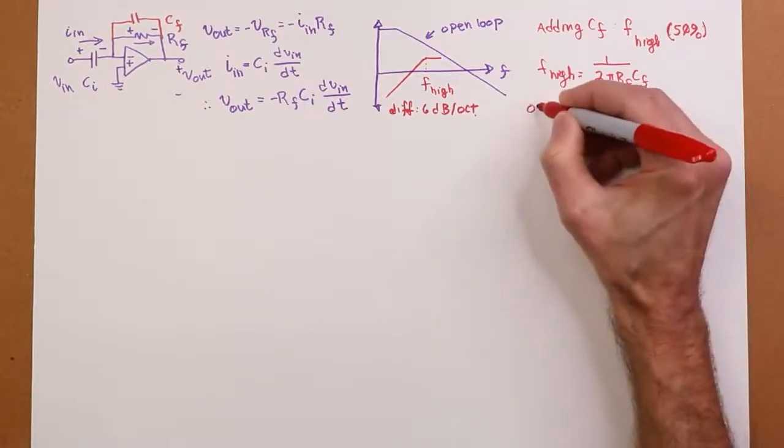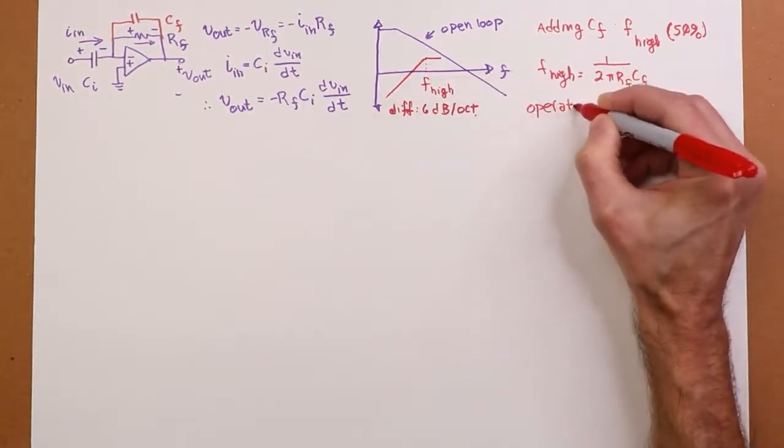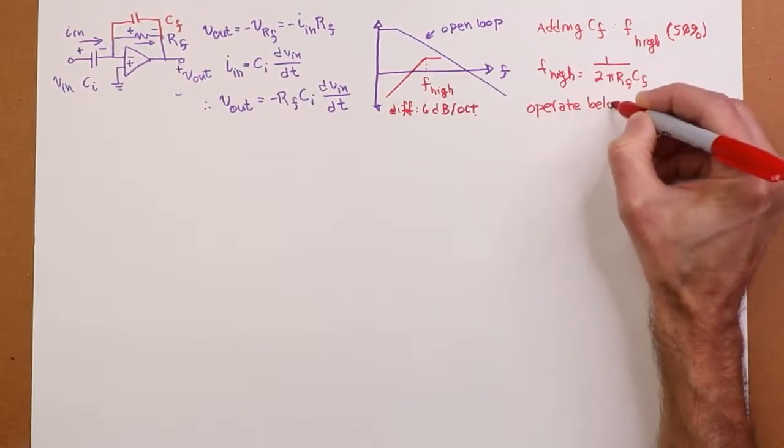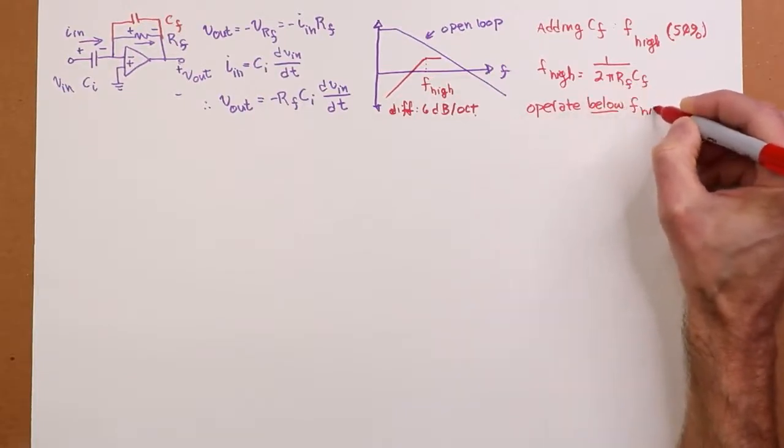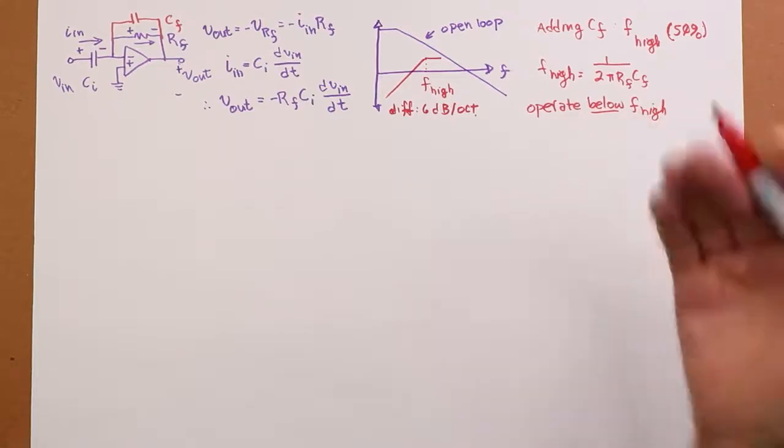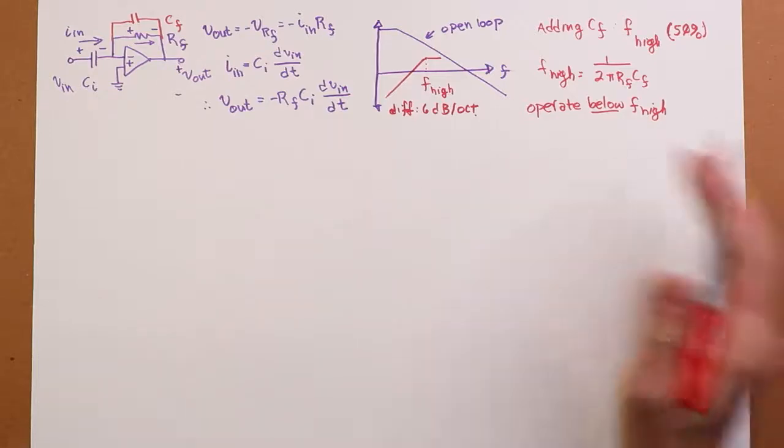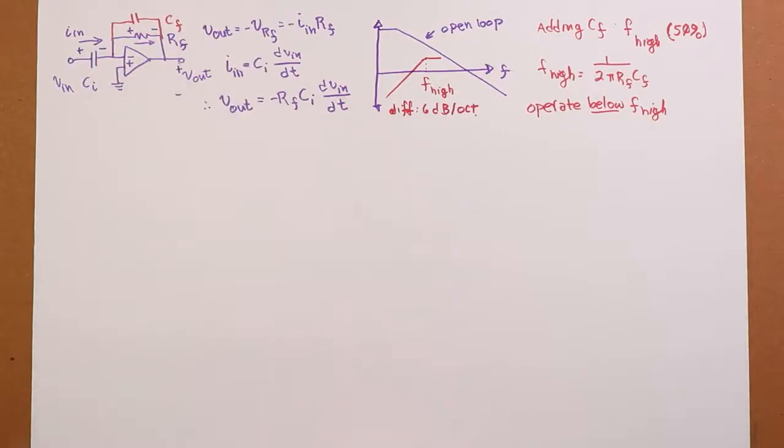So we want to operate below F_high. If we're a decade below it, you'll have very high accuracy. You'll be about 99% accurate, assuming you're using simple sine waves.